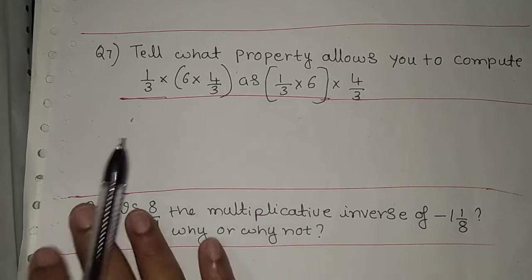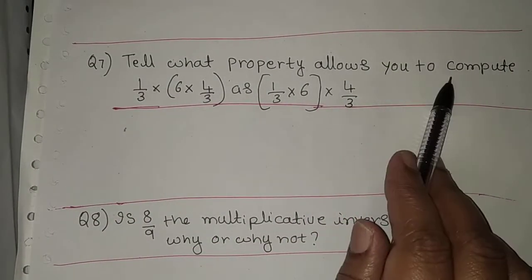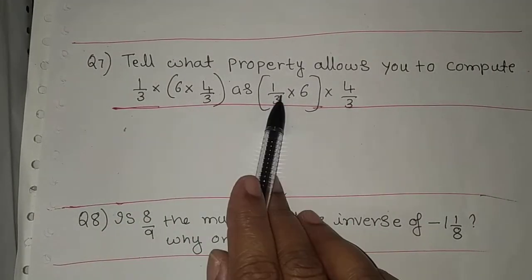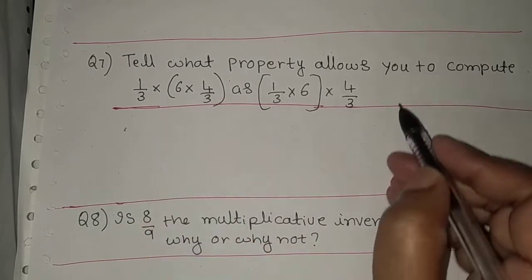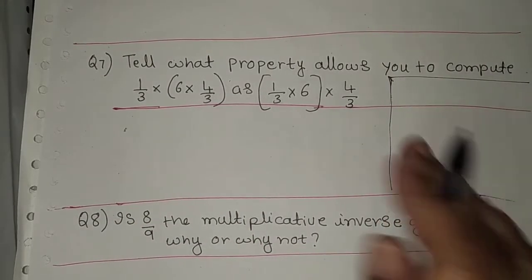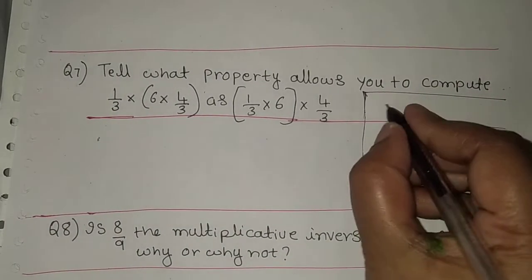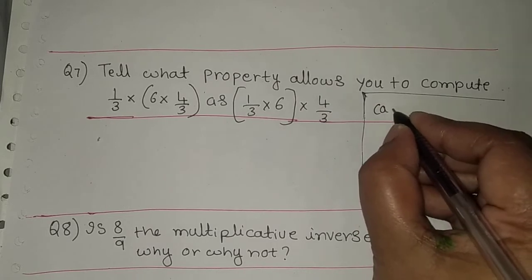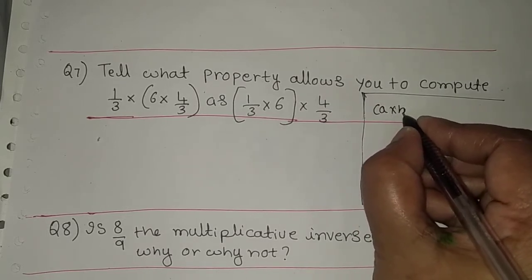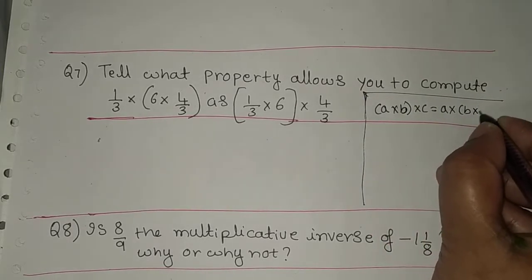Moving on to question 7: tell what property allows you to compute this. We need to identify which property is being used. Here they have used: a into b into c equals a into b into c, with different bracketing.